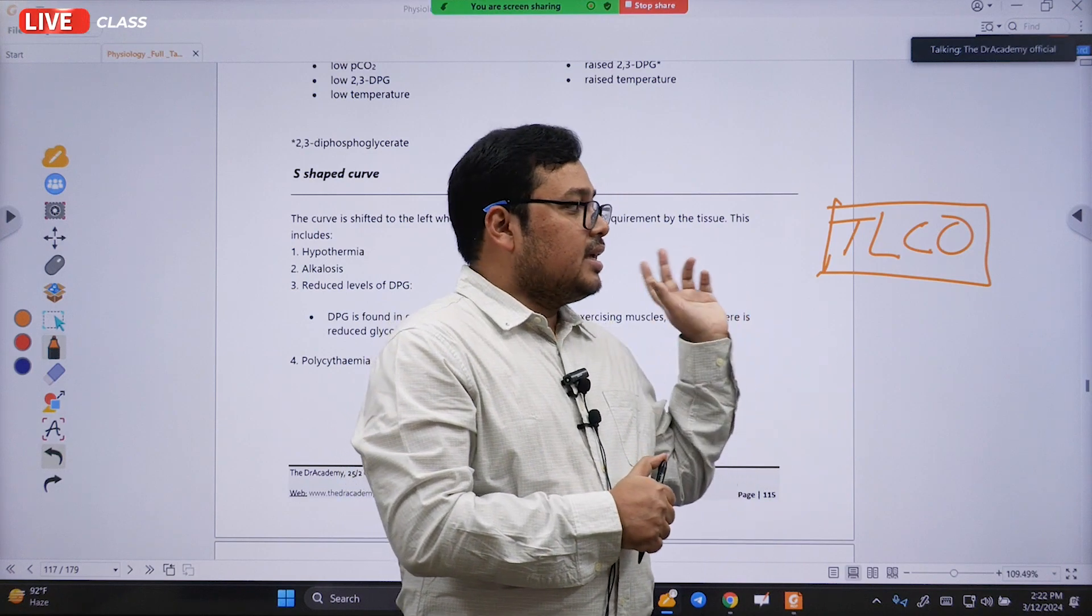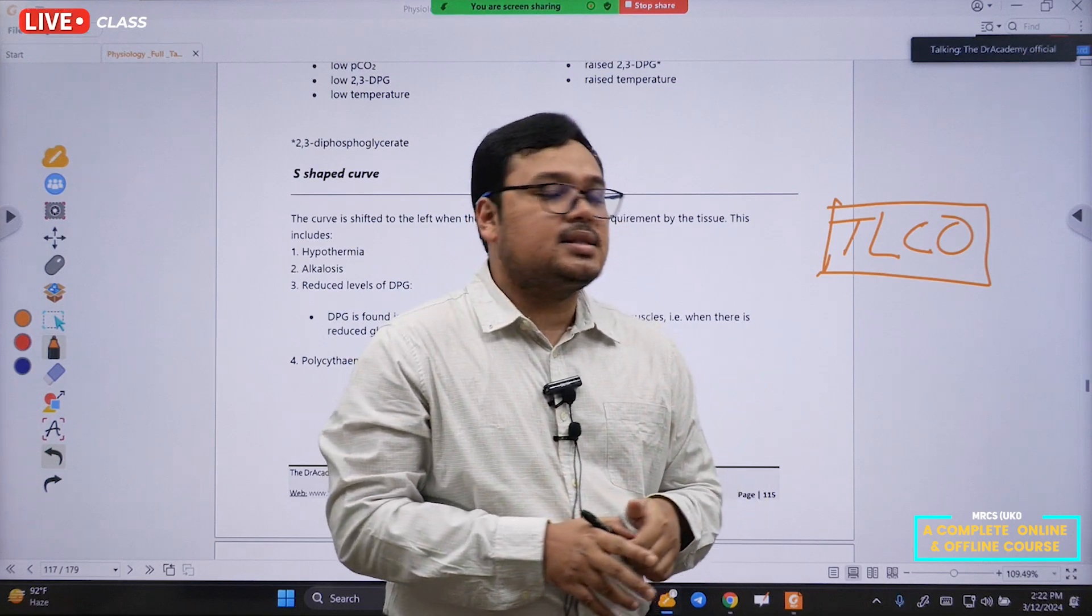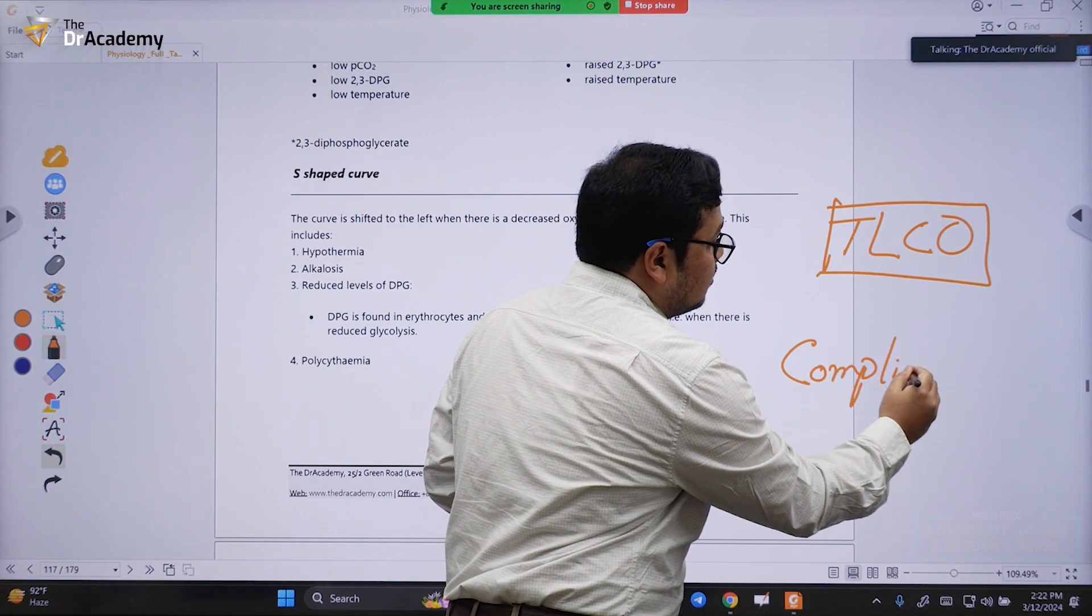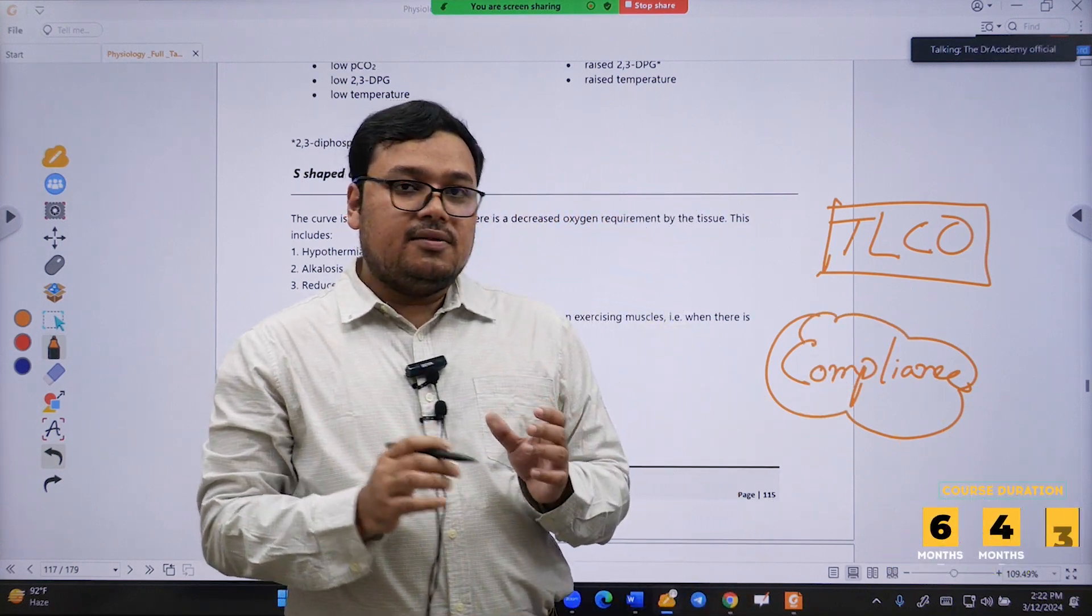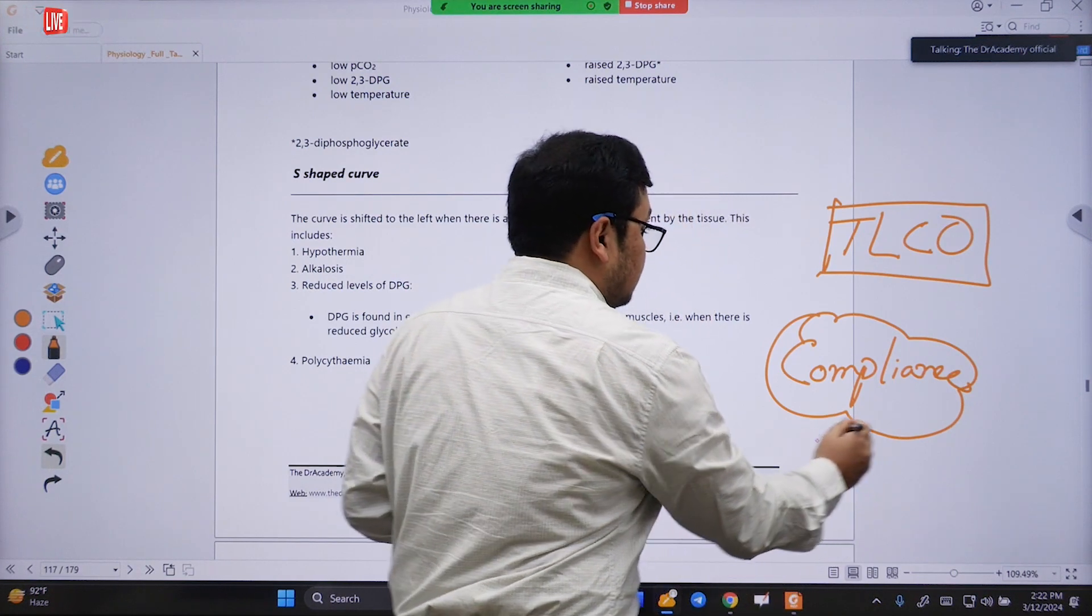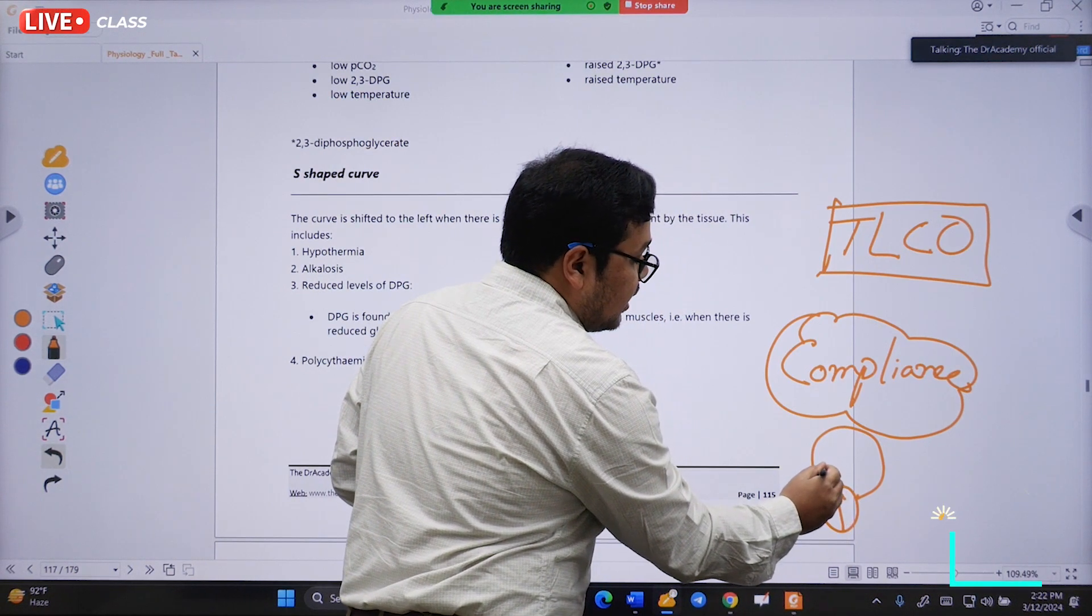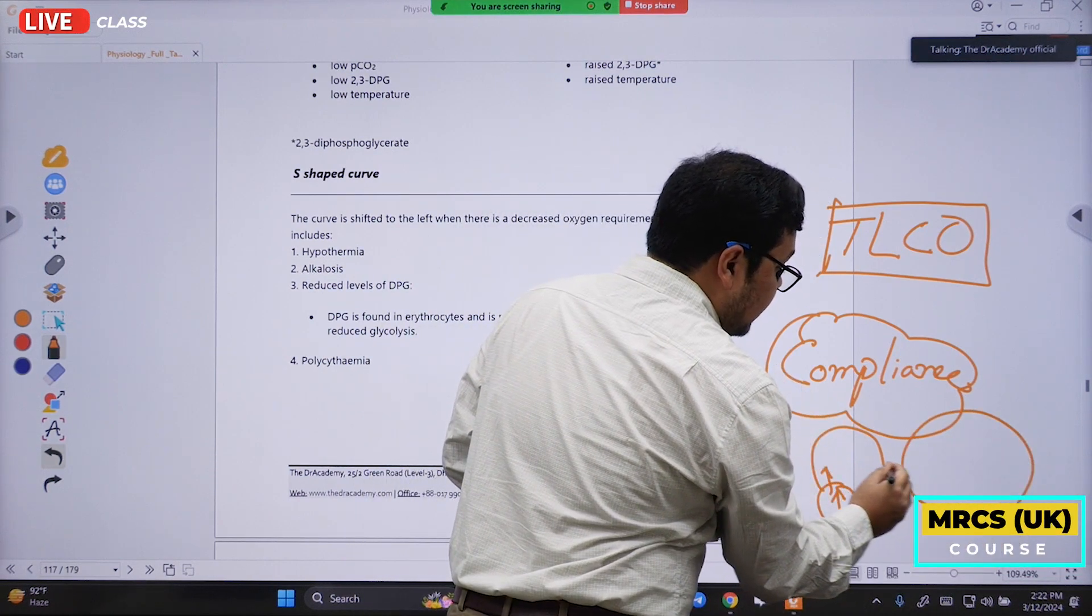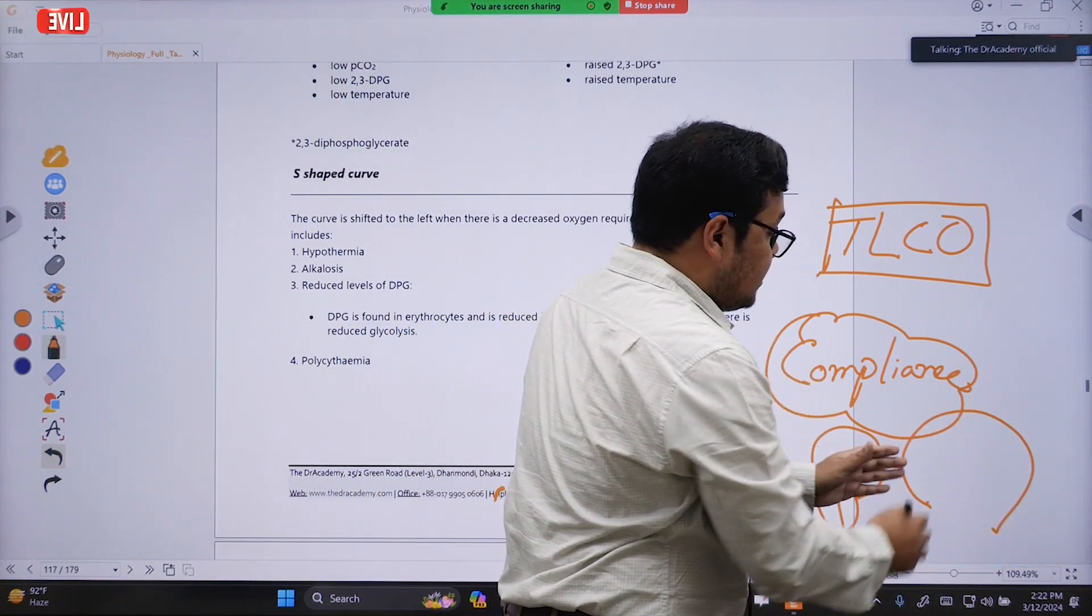Another topic is pulmonary compliance. What is compliance? For example, if we give you a balloon - think about this balloon. You give one unit of pressure inside this balloon, and it will increase in size from here to here. Depending on its elasticity, it might increase up to here.